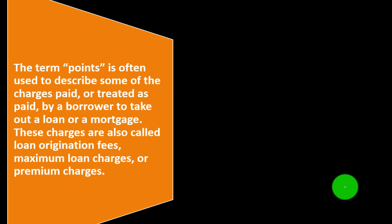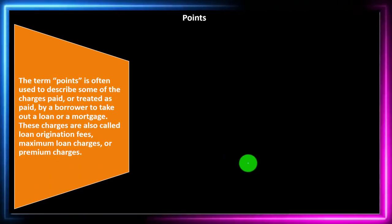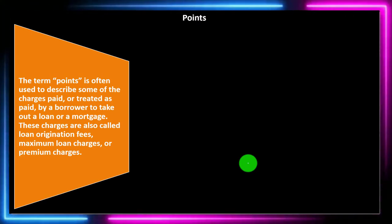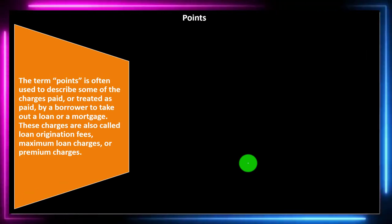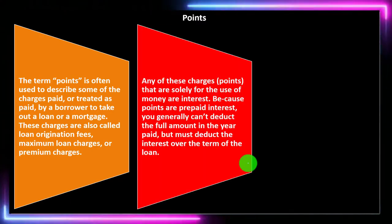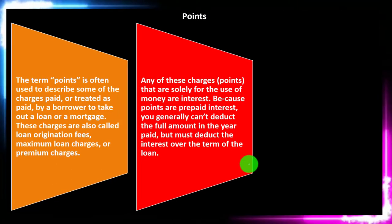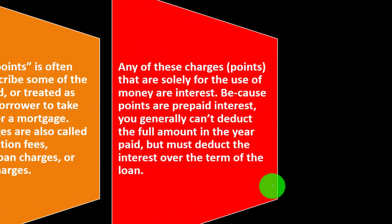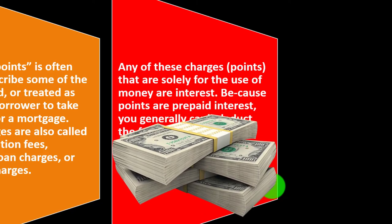The term 'points' is often used to describe some of the charges paid or treated as paid by a borrower to take out a loan or a mortgage. These charges are also called loan origination fees, maximum loan charges, or premium charges. When thinking about points, we have to consider what the points are being applied to — are they being applied to charges or to interest? And if they're interest, they're possibly going to be prepaid interest. Any charges for the use of money are interest — basically, the rent on money is interest.